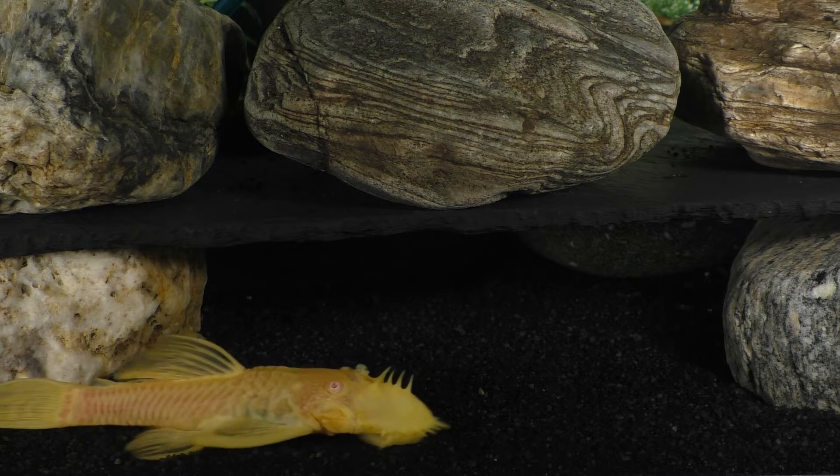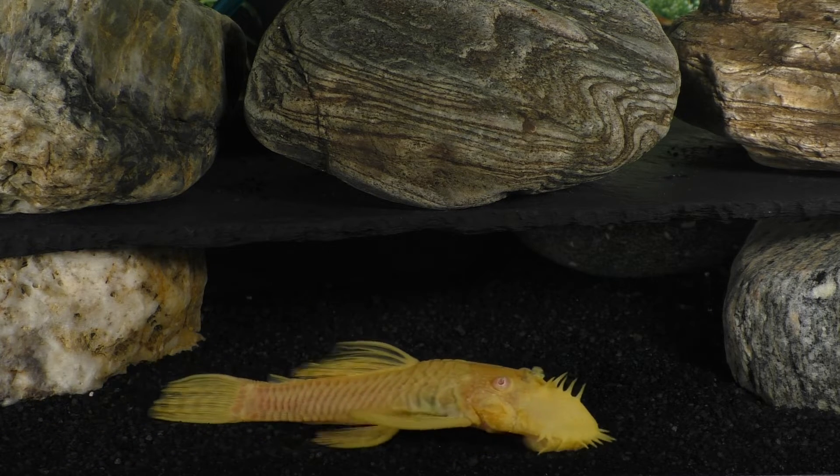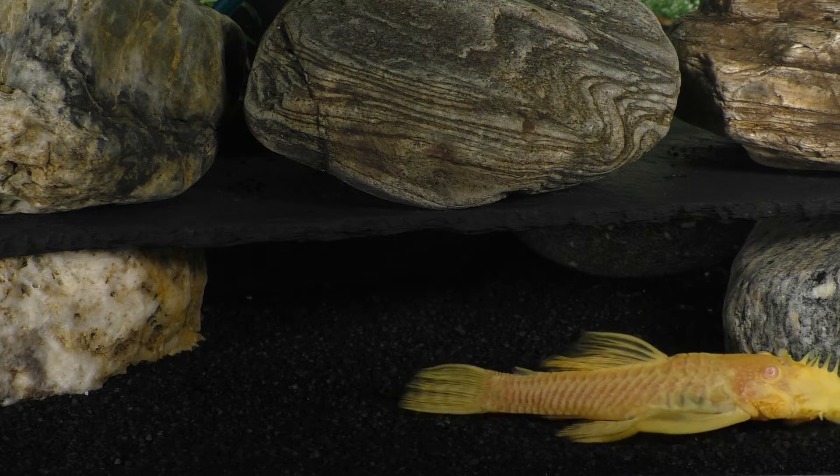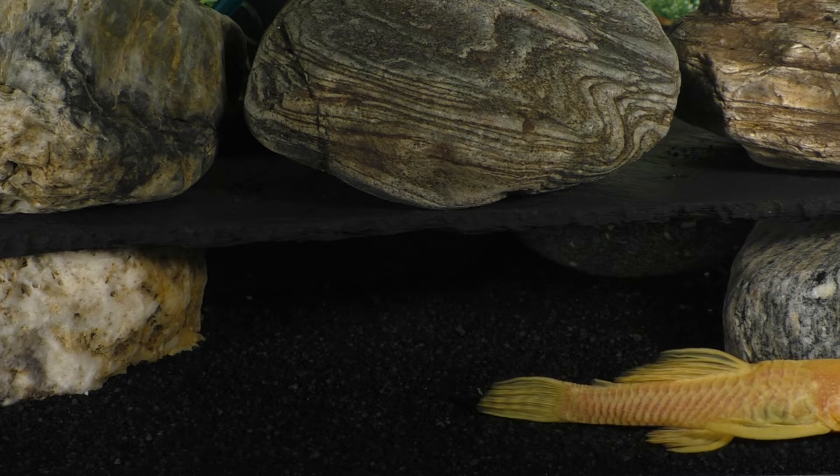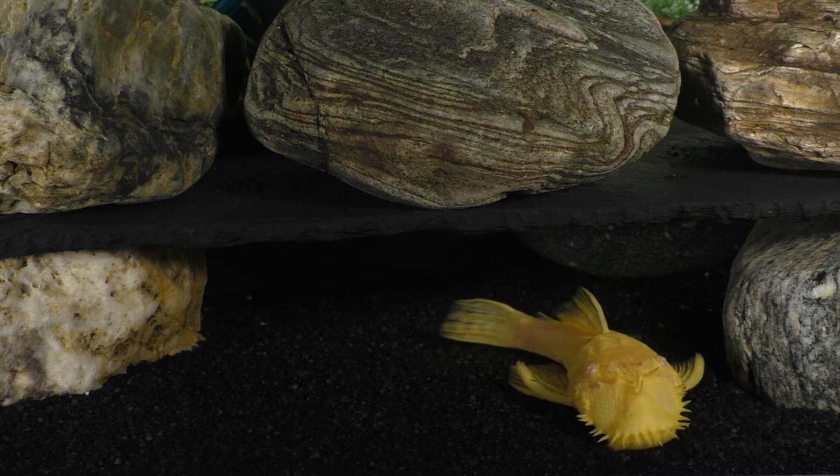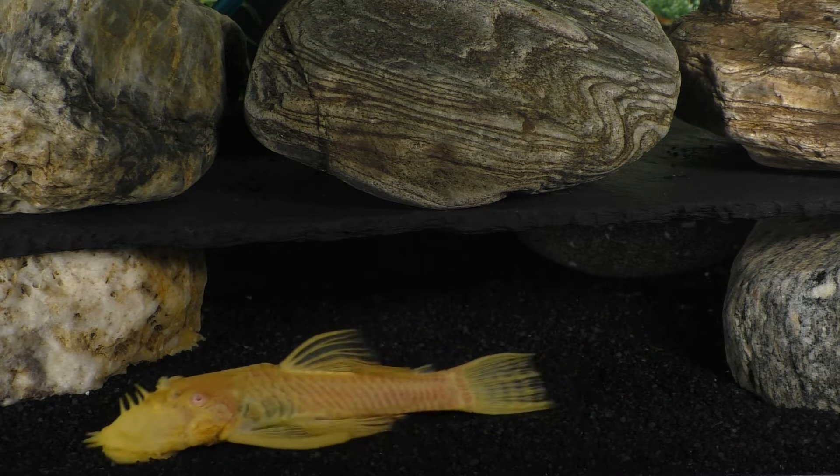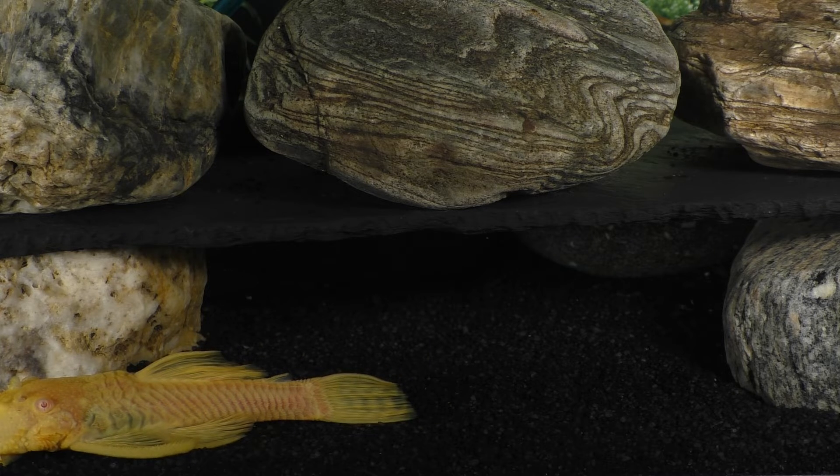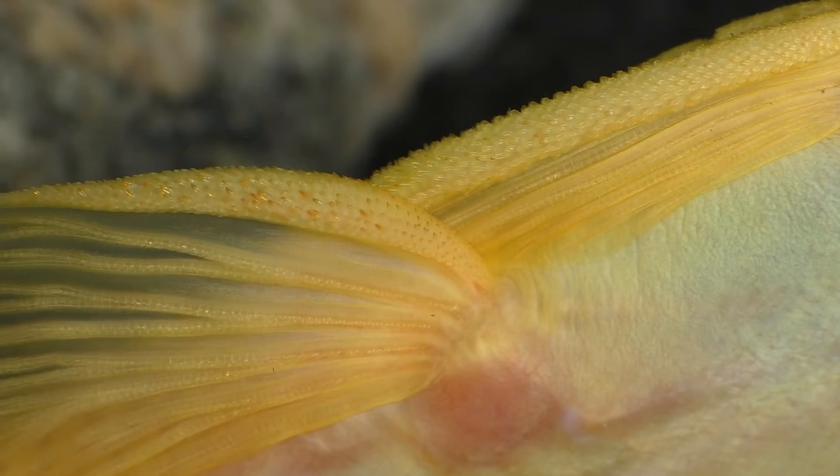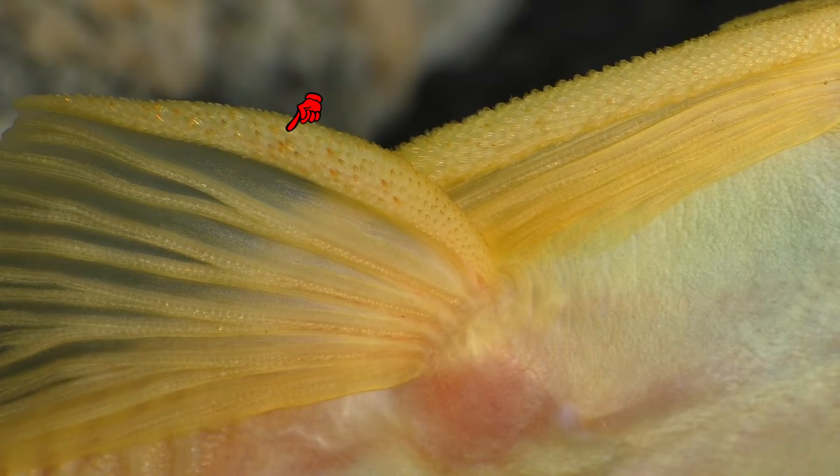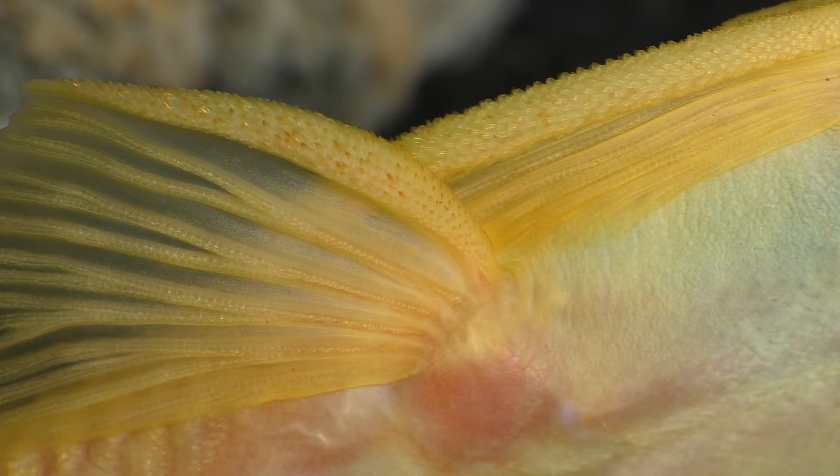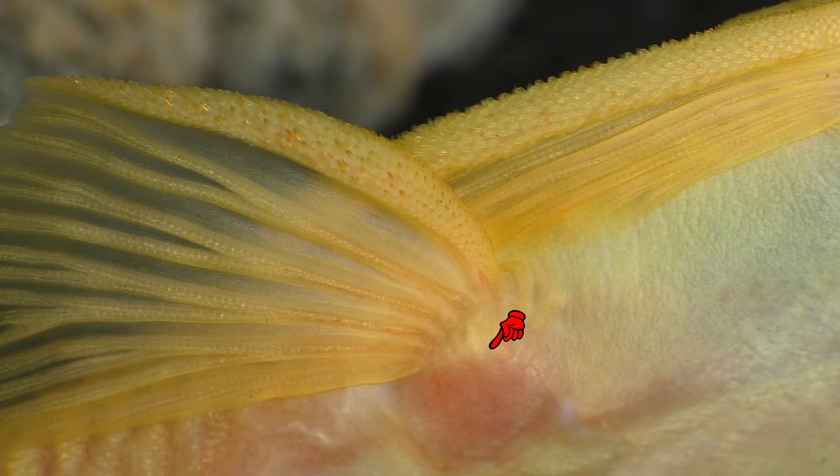This back and forth motion of the ventral fins allows the pleco to inch along the bottom of a fast-moving stream without having to lift its body off the substrate and then risk being swept away by the current. In this close-up view of the ventral fin as seen from the bottom, you can see the spines on the leading edge of the fin as well as the rich supply of blood being pumped to the muscles used to power the fins.